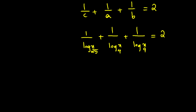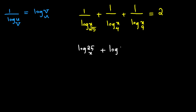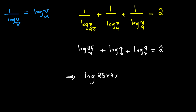Using the logarithm identity that states 1 over log(u) with base v equals log(v) with base u, we can rewrite this as log 25 with base x plus log 4 with base x plus log 9 with base x equals 2. Since x is a common base, we can combine these into a single logarithm: log of (25 times 4 times 9) with base x equals 2.